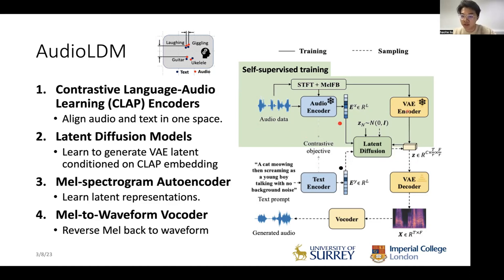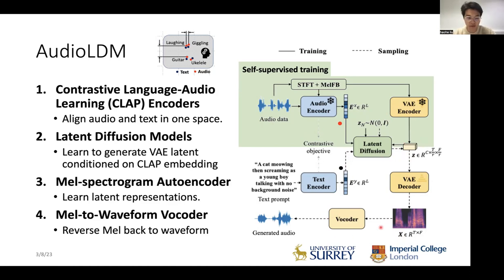The VAE encoder and decoder are trained in a standard way using discriminative loss and reconstruction loss, and we enforce KL divergence loss on the latent space to limit variance. The vocoders are pre-trained using HiFi-GAN. In the next few slides, I'll primarily introduce the CLAP and latent diffusion parts, which correspond to the two training steps described earlier.